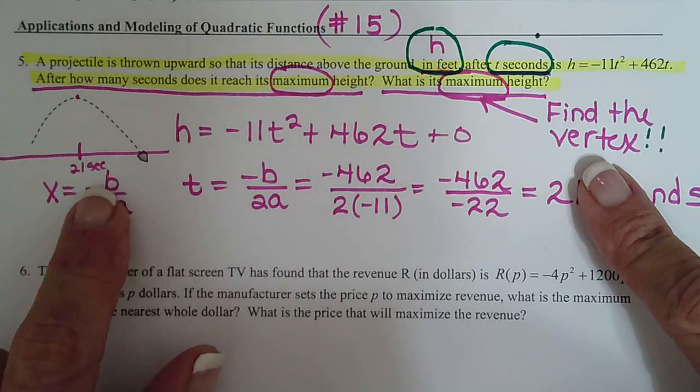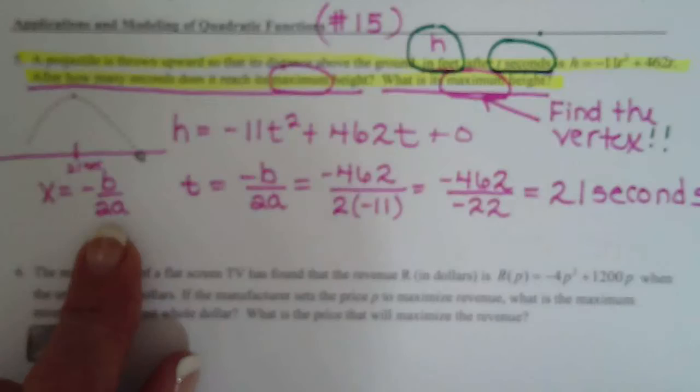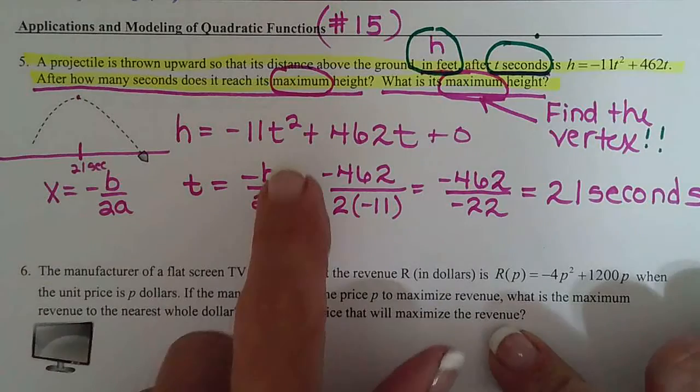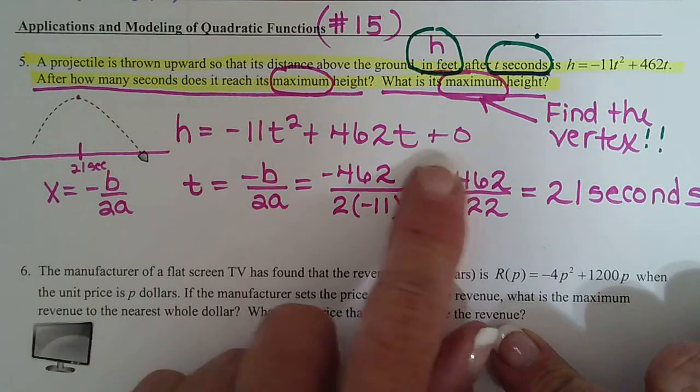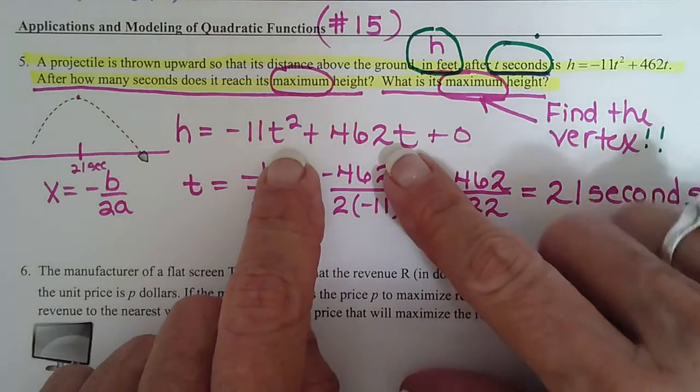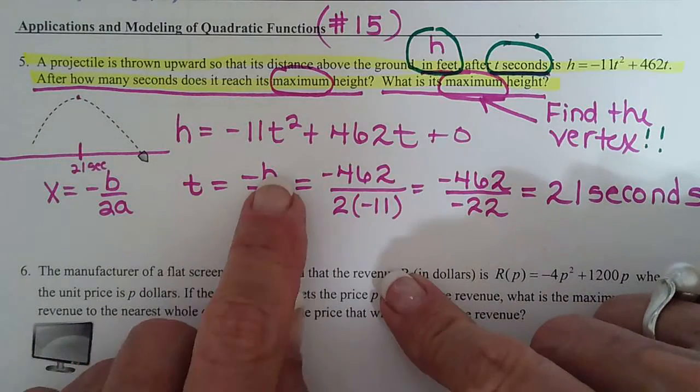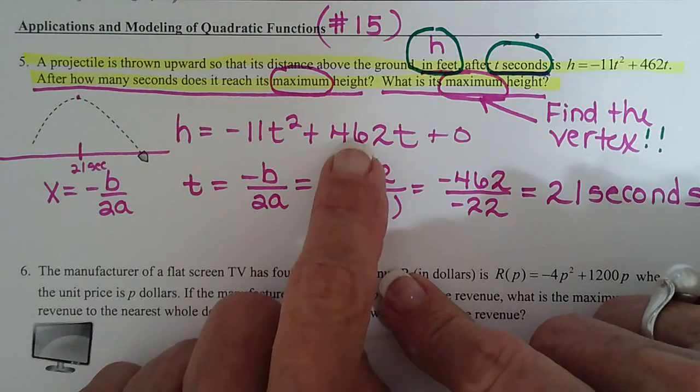So our new formula is h equals the opposite of b over 2a. But I look in this problem and there isn't an x, so this is my y. That means they're using t in place of x, so t is opposite of b over 2a.